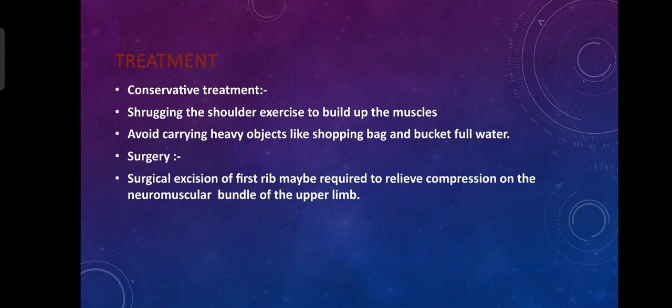Conservative treatment includes shrugging shoulder exercises to build up the muscles and avoiding carrying heavy objects like shopping bags or buckets of water. Surgical excision of the cervical rib may be required to relieve compression on the neurovascular bundle of the upper limb.